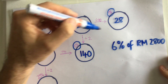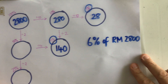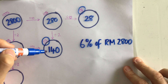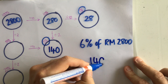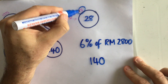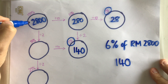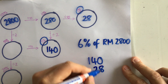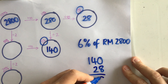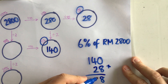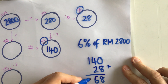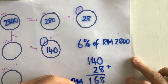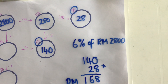So if I want to find 6% of 2,800, I can do that by adding 5% and 1% together: 140 plus 28. That gives us 168. So putting the units back in, 6% of 2,800 ringgit is 168 ringgit.